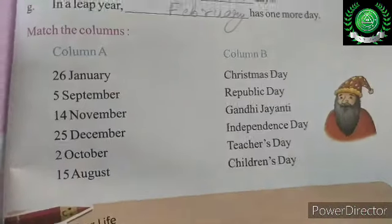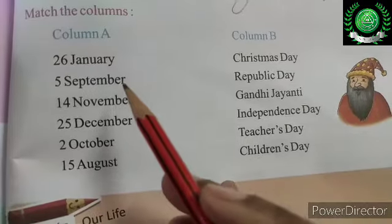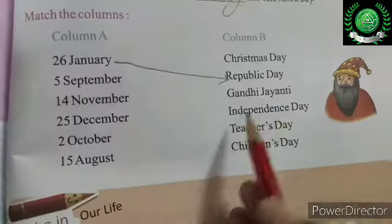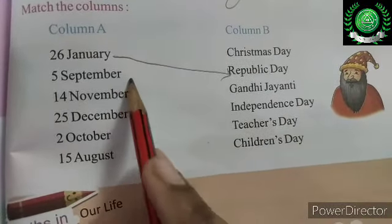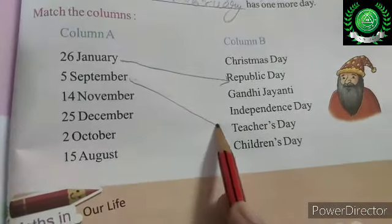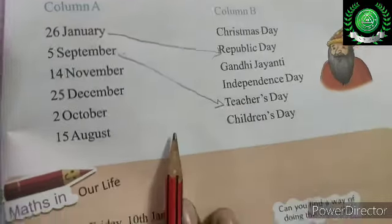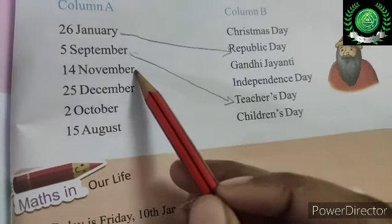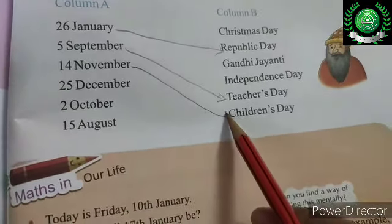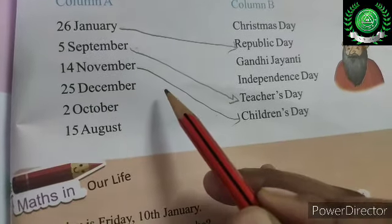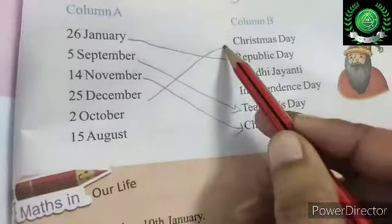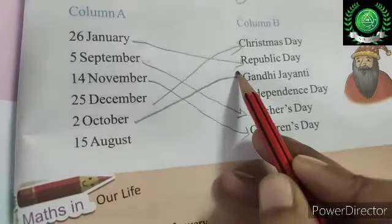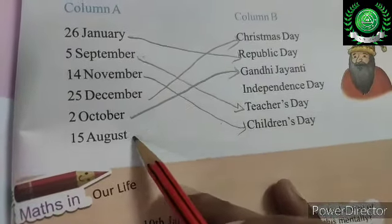Matching exercise: 26 January is Republic Day. 5 September is Teachers' Day. 14 November is Children's Day. 25 December is Christmas. 2 October is Gandhi Ji's birthday. 15 August is Independence Day.